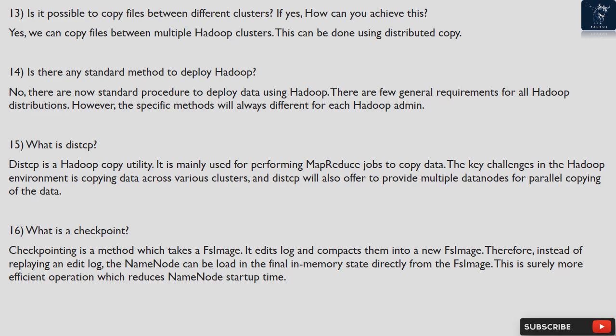Question 16: What is a checkpoint? Checkpointing is a method which takes an FS image and an edits log and compacts them into a new FS image. Therefore, instead of replaying an edit log, the name node can load the final in-memory state directly from the FS image. This is a more efficient operation which reduces name node startup time.